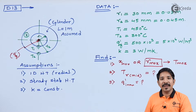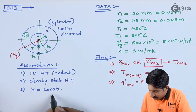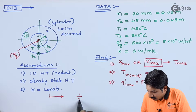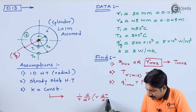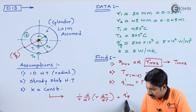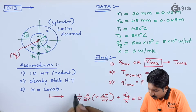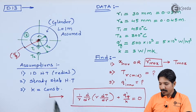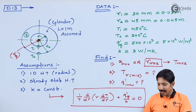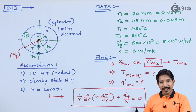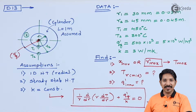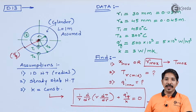With these assumptions we can simplify the general equation to: (1/r) · d/dr(r · dT/dr) + q_g/k = 0. We need to integrate this equation twice to get the solution, which will introduce two constants C1 and C2 that we solve using boundary conditions.